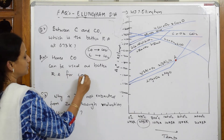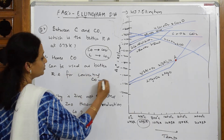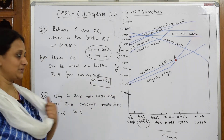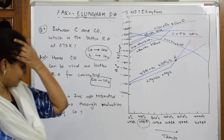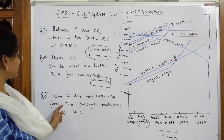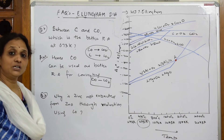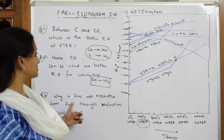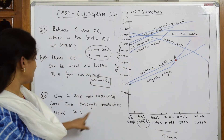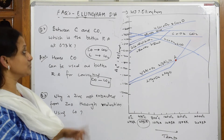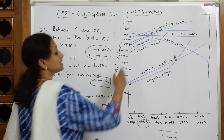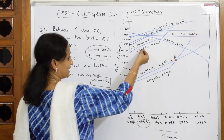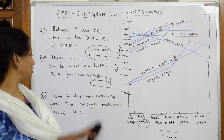That is important. Now let us come back — it is almost a similar equation we will be doing for every metal. So why is zinc not extracted from zinc oxide through reduction using CO? Zinc oxide is here on the graph — why can't I use CO for the reduction of zinc from zinc oxide to finally get the metal?